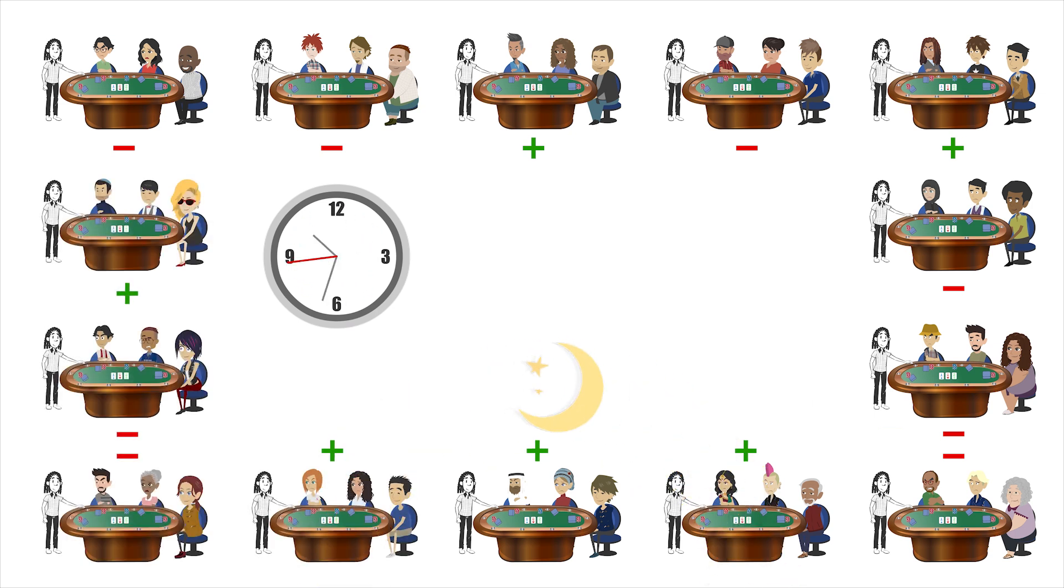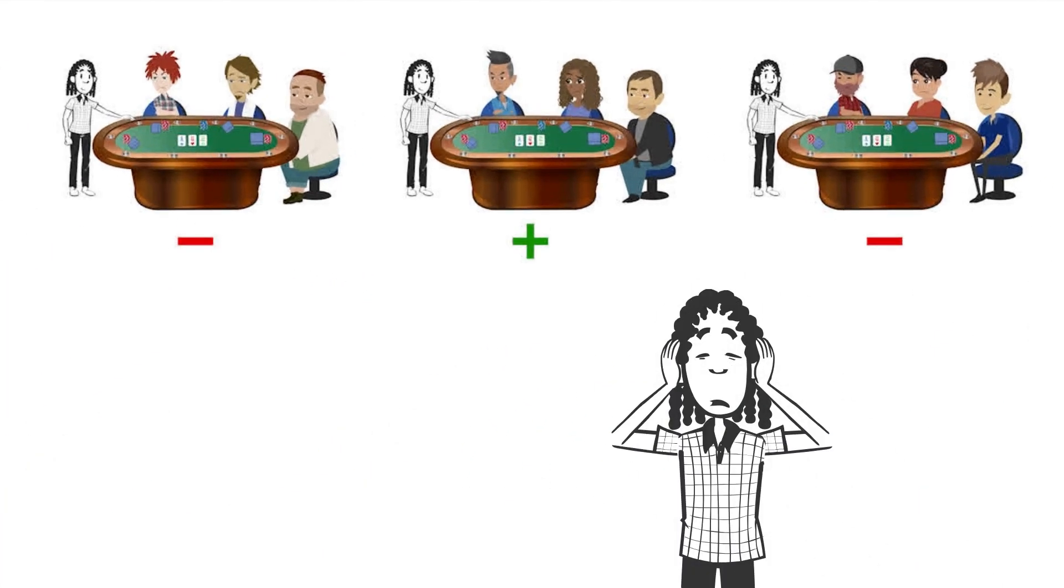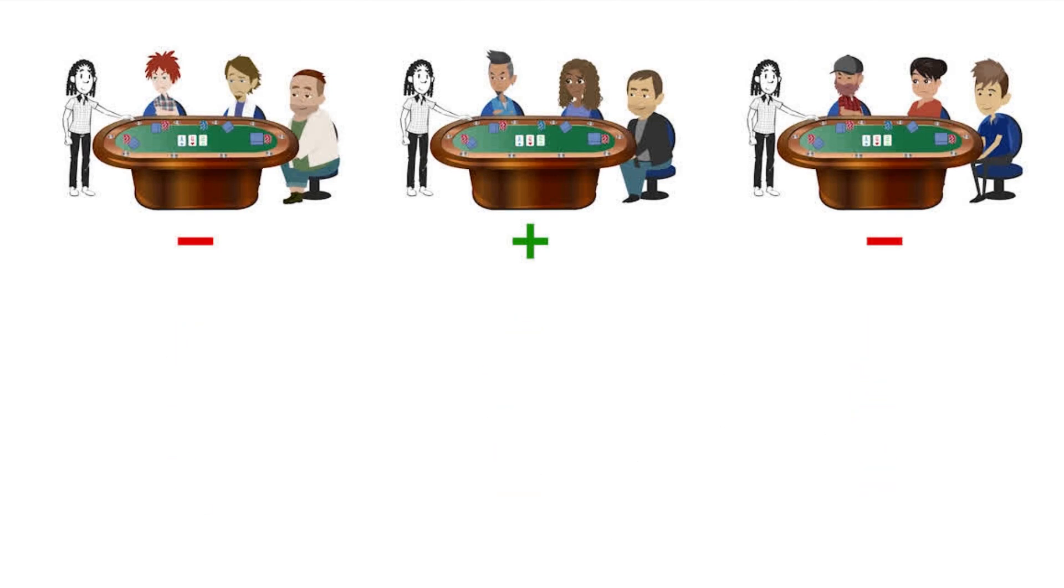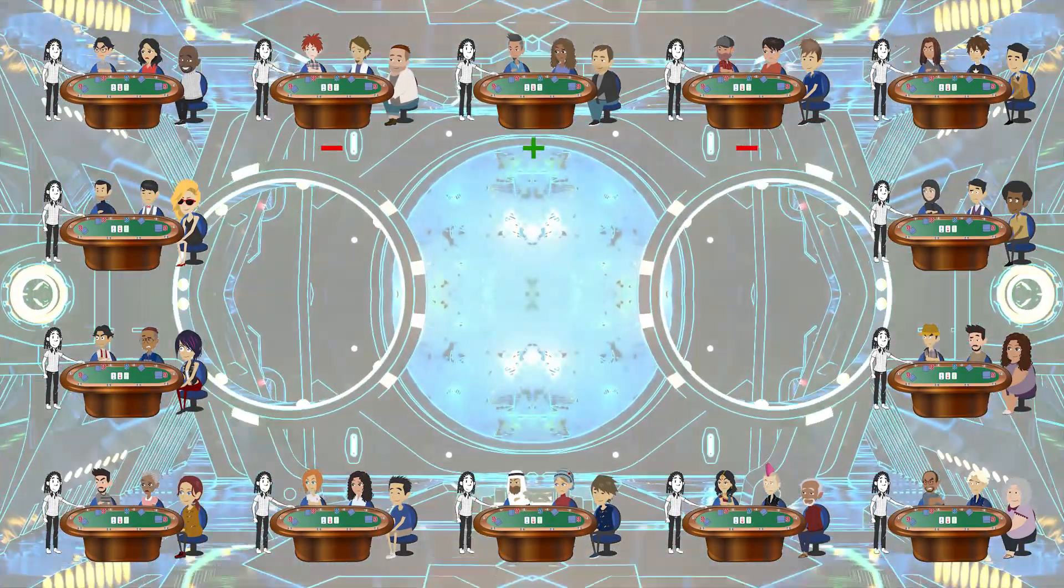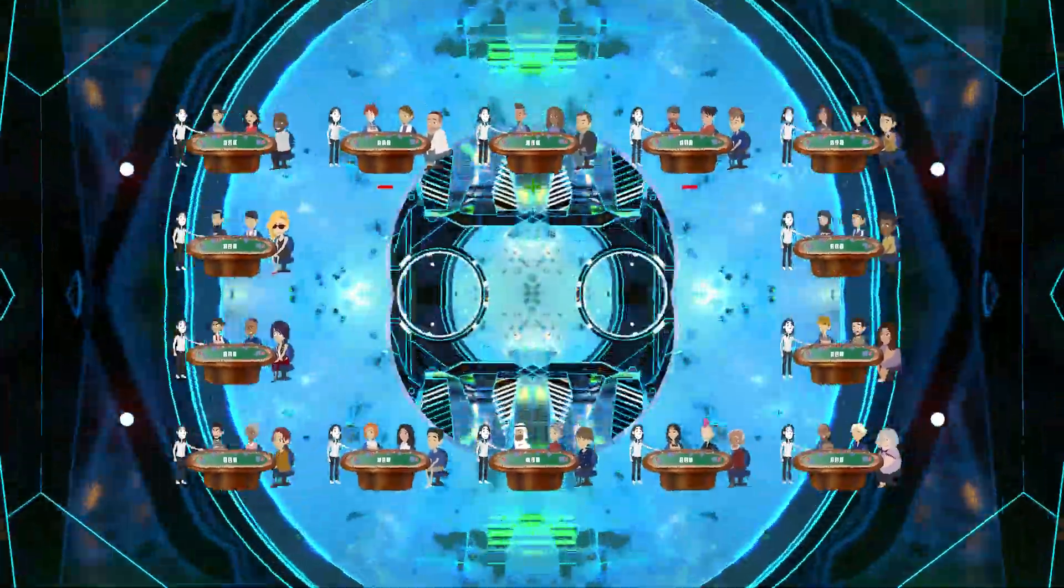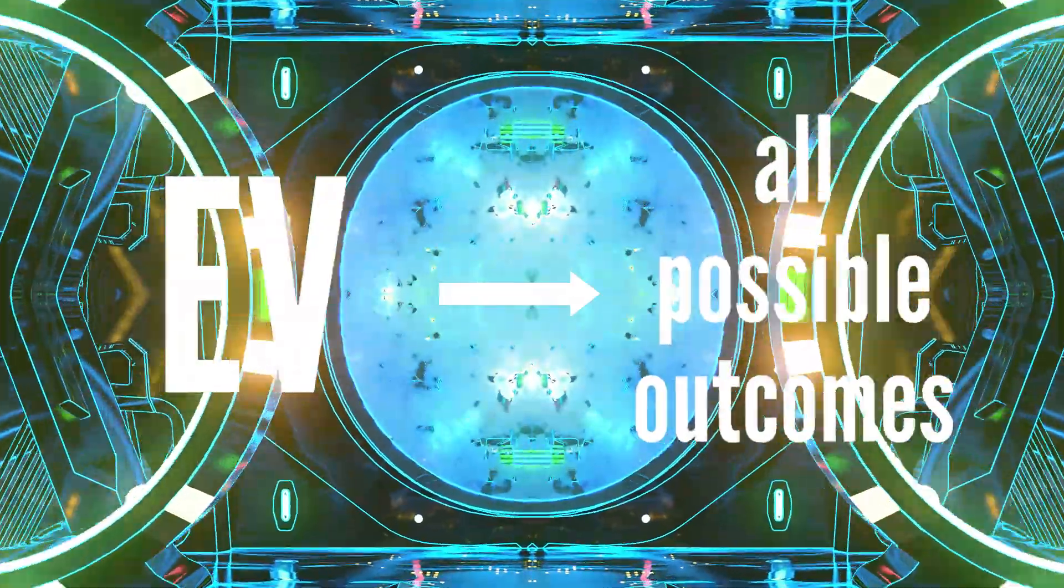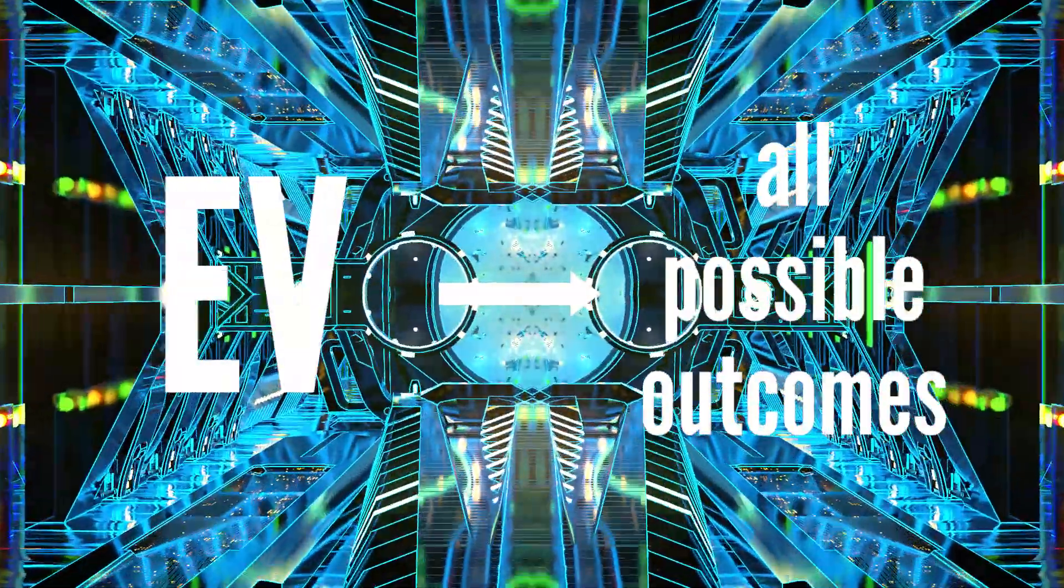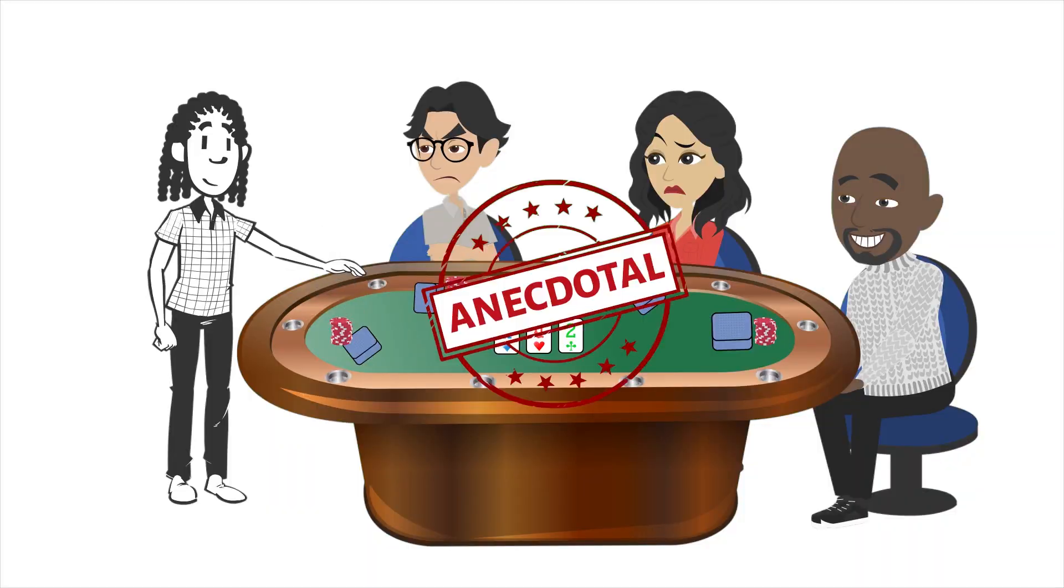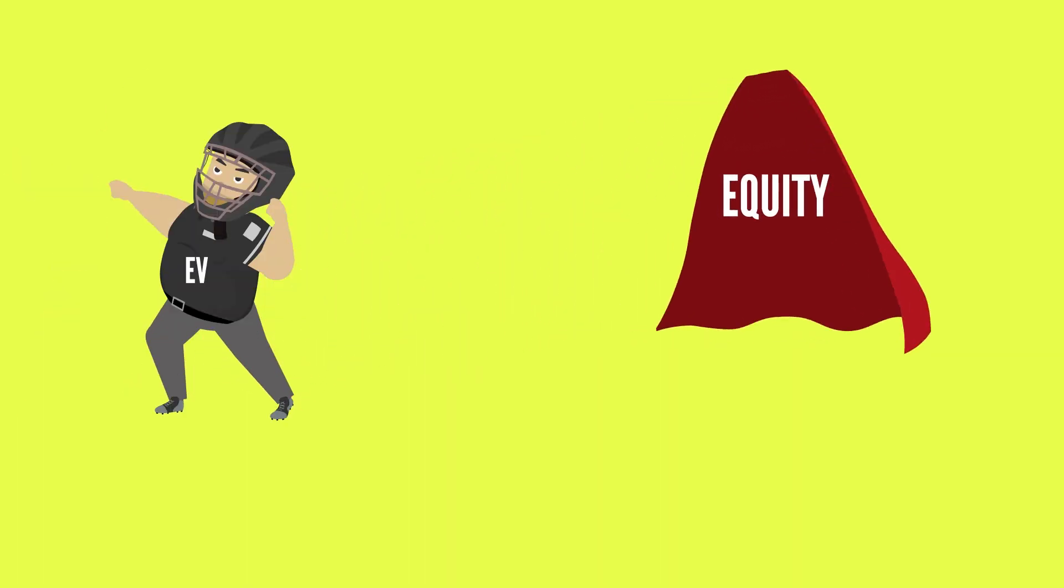Instead, we must imagine that each hand of poker is playing out an infinite number of times. Our EV is a function of all possible outcomes on the infinite spectrum, as opposed to one specific outcome we've observed. EV is connected to equity, but it's not the same.